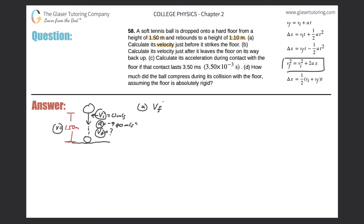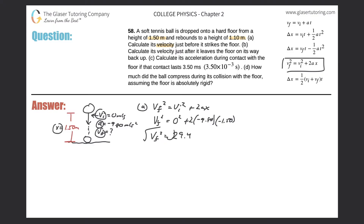For Part A, the equation is: final velocity squared equals initial velocity squared plus 2a times displacement. The final velocity is the unknown; initial velocity is zero; acceleration is negative 9.80; and displacement is negative 1.50 because the object moves downward in the negative y direction. Plugging in: 2 times negative 9.8 times negative 1.5 equals 29.4. Taking the square root gives plus or minus 5.42.